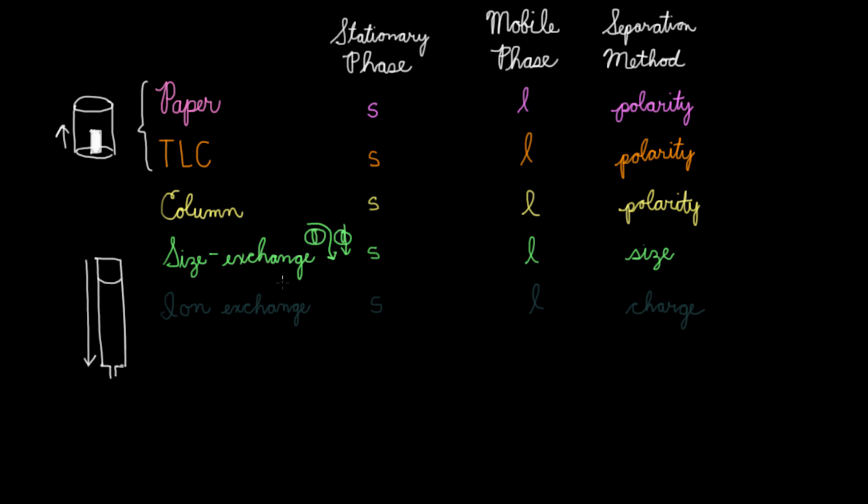In ion-exchange chromatography, the beads that are filling this column have some kind of group on them that is charged. Compounds that have the same charge will be repelled by the column, meaning they'll travel pretty quickly. But compounds that have an opposite charge will bind tightly to the column and will be more reluctant to come out since they're so attracted to the stationary phase.